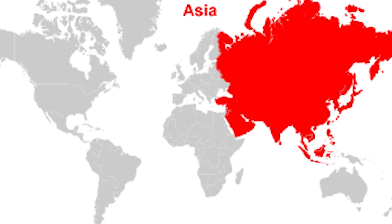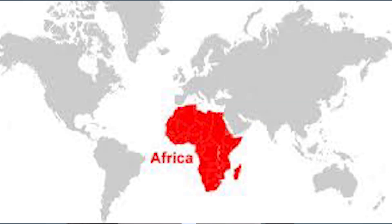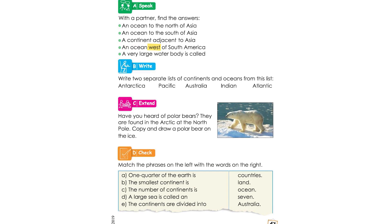What continent is adjacent to Asia? We can see that Asia is adjacent to Europe. Asia is also adjacent to Africa. An ocean to the west of South America — our compass point shows the west.